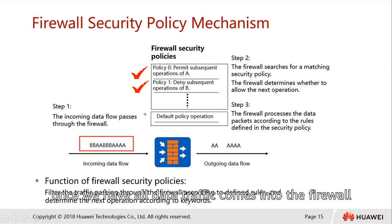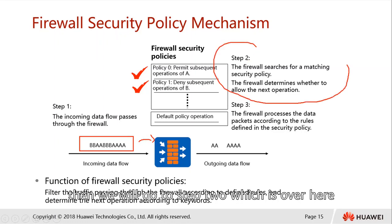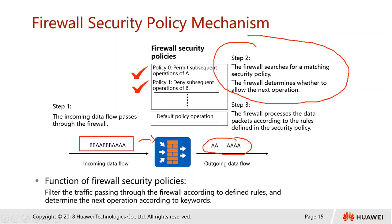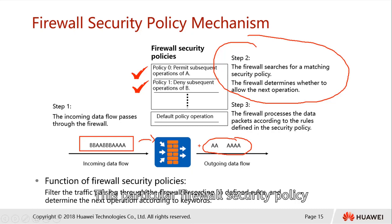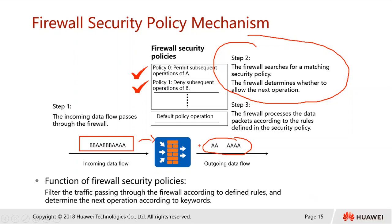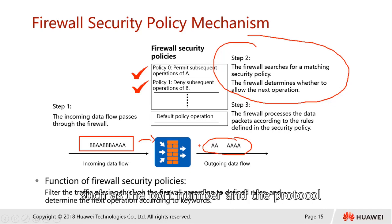Once data traffic comes into the firewall we move to step 2. In step 2, all matched sessions are allowed to pass through. If none of them are matched, everything will be discarded. The firewall security policy can filter according to source and destination IP, source and destination zone — the security zones we discussed, the logical areas — as well as based on user, and based on service such as port number and protocol.